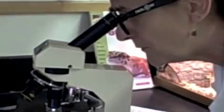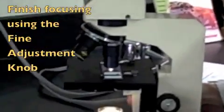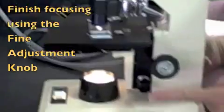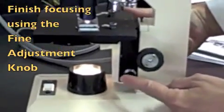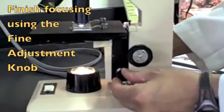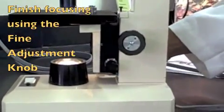Now, I'm going to look through the eyepiece and I will finish focusing using the fine adjustment knob. This is the small knob here. So, I'll make any fine adjustments using this knob.